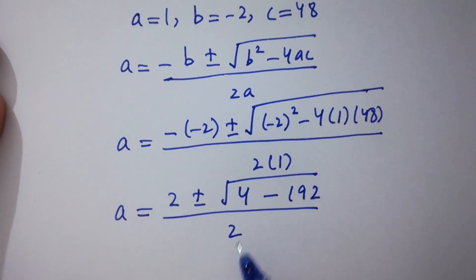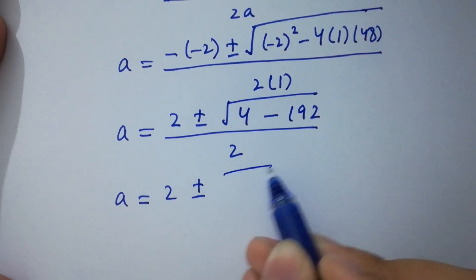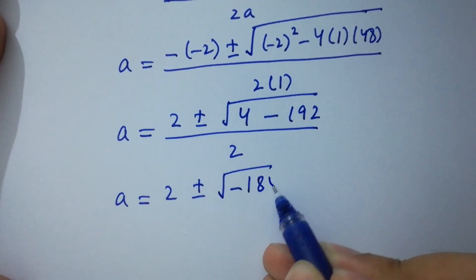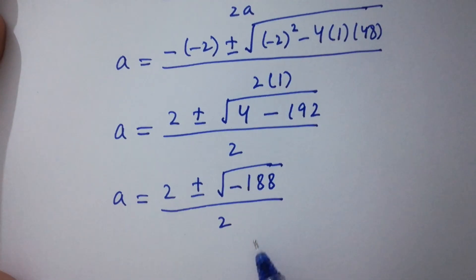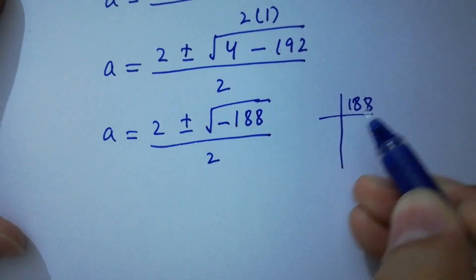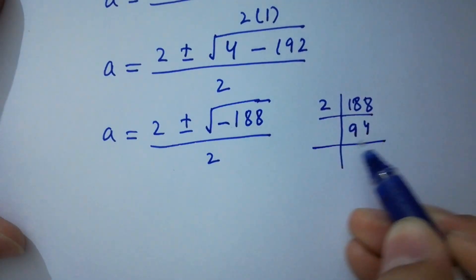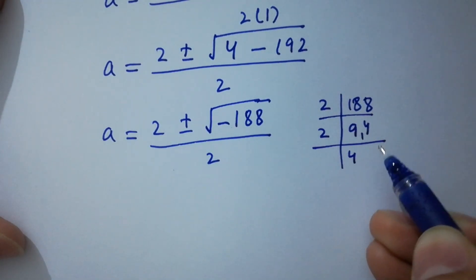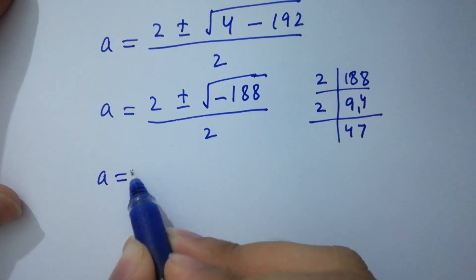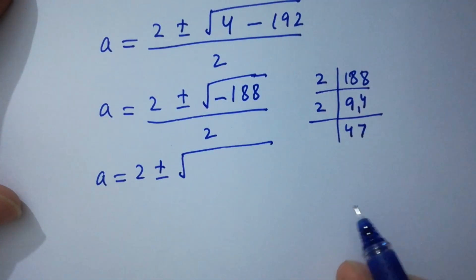We have 2 plus or minus square root of 4 minus 192 over 2, which simplifies to 2 plus or minus square root of minus 188 over 2.